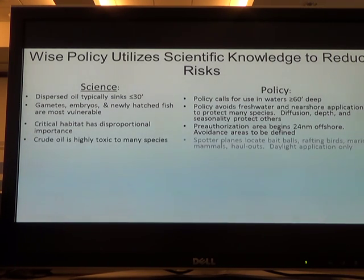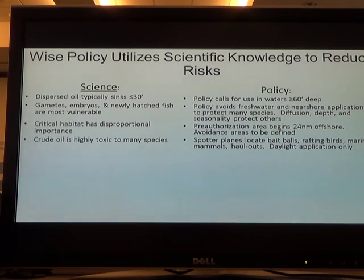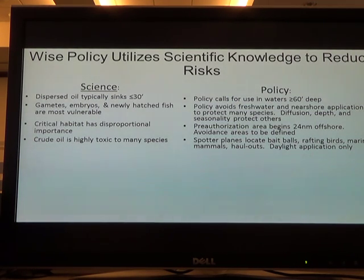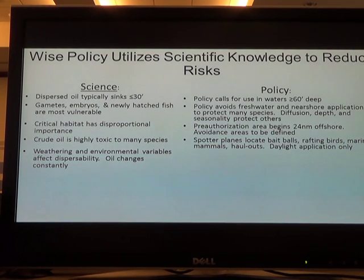We know that crude oil is highly toxic to whatever species. So our policy says that before we authorize dispersant use, we'll send out spotter planes to look for bait balls, rafting birds, haul-outs, and marine mammals. We're not going to use dispersants within at least 500 meters of spotted organisms. That's not a black-and-white decision either — if you're 500 meters upstream of the organism, that's very different than if you're 500 meters downstream. We also say that dispersants will only be used in daylight so we can see those organisms in sensitive areas.